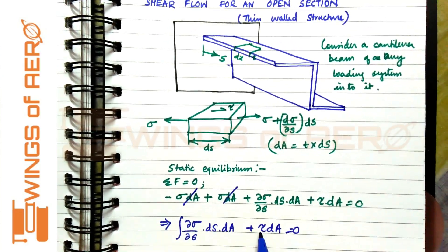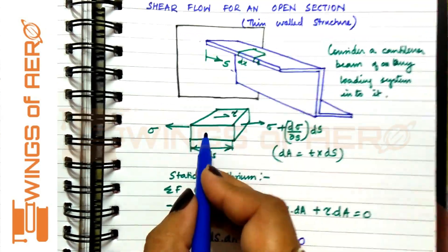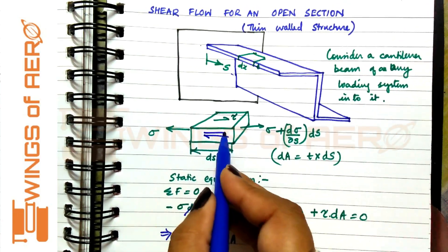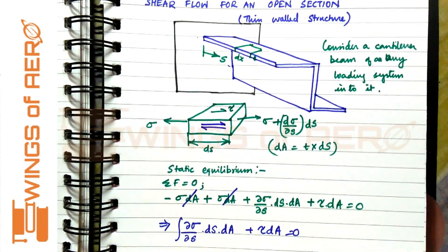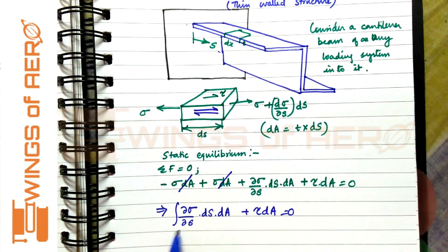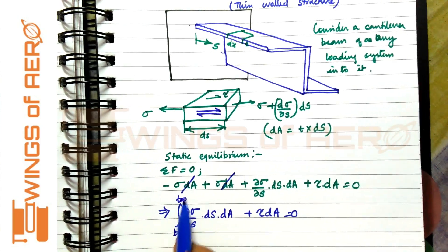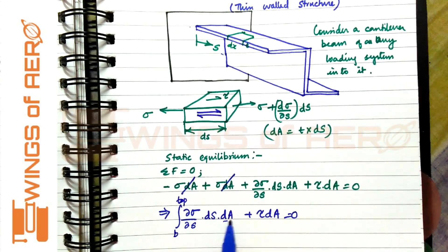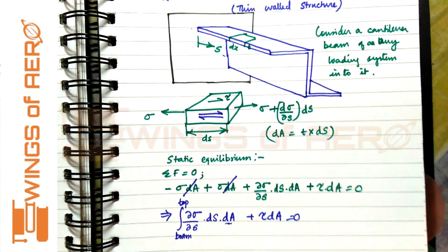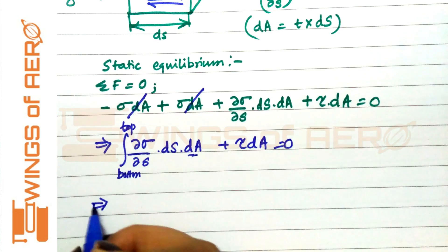The shear stress will remain the same across the section, while the bending stress varies from the bottom to the top. The area is varying, so we can simplify this equation accordingly.